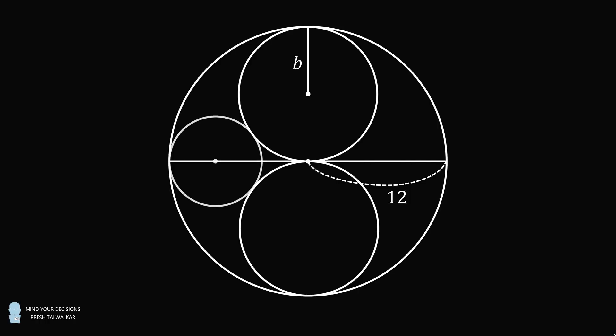Then, inscribe a circle that's tangent to these two circles and the large circle, and let its radius length be equal to a. Finally, inscribe a circle in the semicircle that's tangent to the diameter, tangent to the large circle, and tangent to the circle with radius length equal to b. Let this radius length be equal to c.